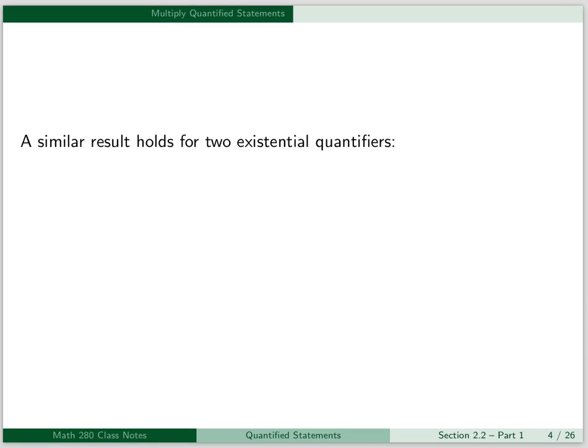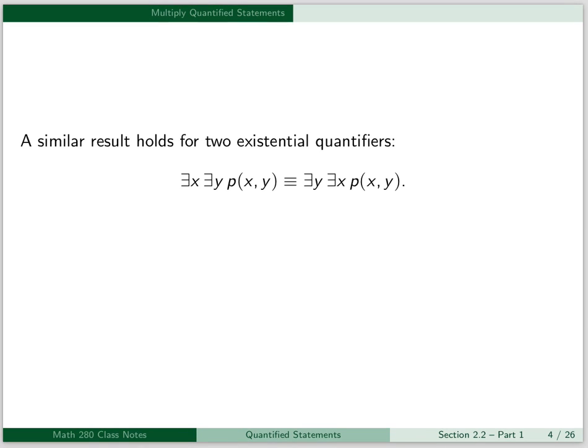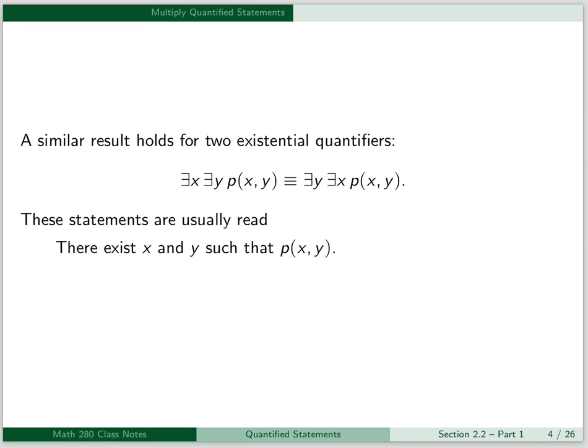A similar result holds for two existential quantifiers. There exists an x, there exists a y, p of x, y is logically equivalent to there exists a y, there exists an x, p of x, y. These statements are usually read: there exist x and y, such that p of x, y.